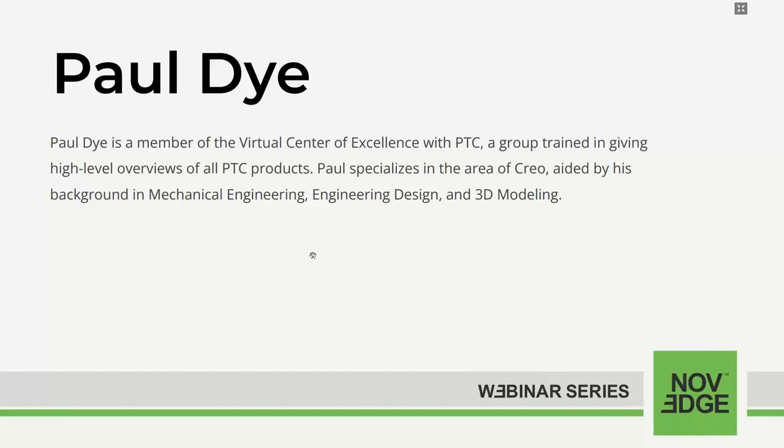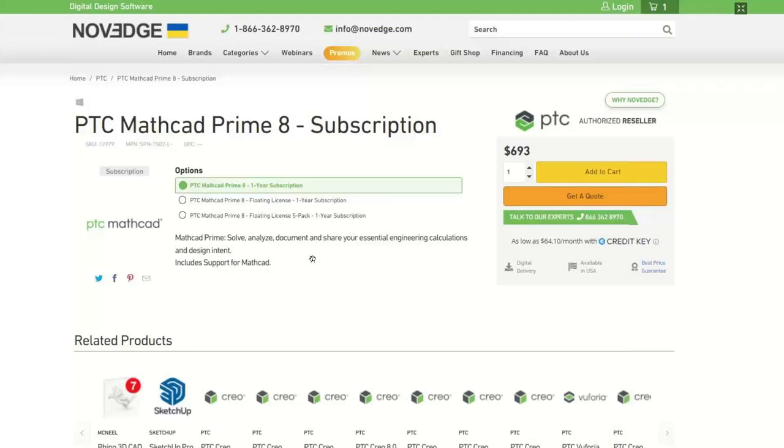Today's webinar presenter, Paul Dye, is a member of the Virtual Center of Excellence with BTC, and he specializes in the area of Creo and is aided by his background in mechanical engineering design and 3D modeling. Now let me tell you a little bit about NoVeg. NoVeg is changing the way designers purchase 3D software, offering more choices, more freedom, best advice, and faster service. Check us out at NoVeg.com, and this is the product page where you can find the new BTC MathCAD Prime 8.